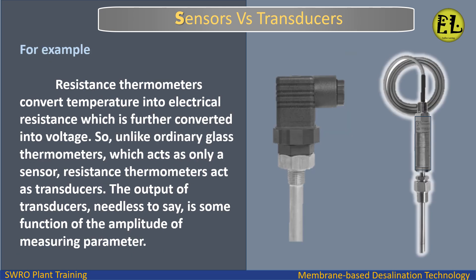For example, resistance thermometers convert temperature into electrical resistance, which is further converted into voltage. So, unlike ordinary glass thermometers, which act as only a sensor, resistance thermometers act as transducers. The output of transducers is some function of the amplitude of the measuring parameter.